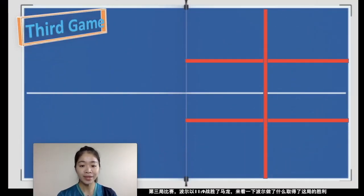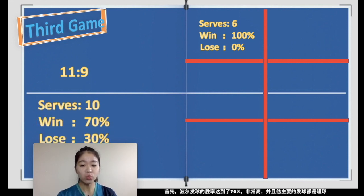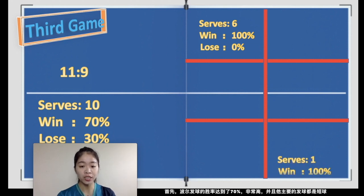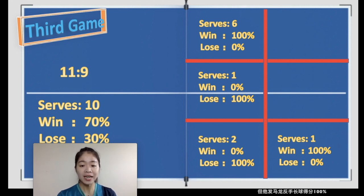In the third game Timo beat Ma Long 11-9. His serve winning percentage was really high, and the majority of his serves were short. Six balls were served to Ma Long's forehand shot area and he got 100% scored. Timo did lose two points at the middle shot area and the backhand side shot area, but he scored 100% on the backhand long area.